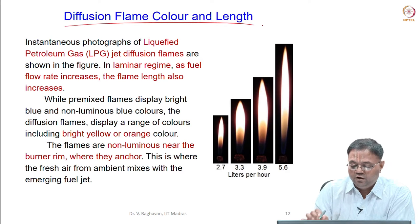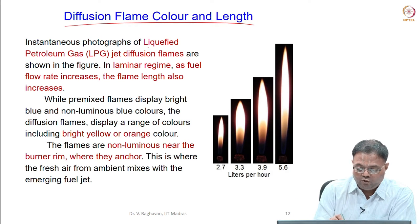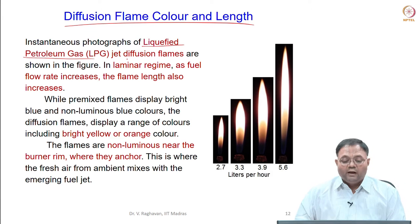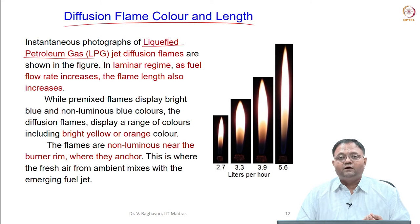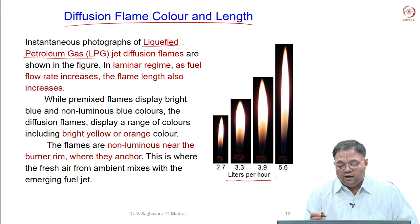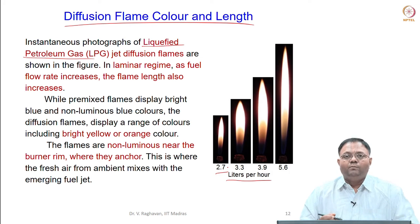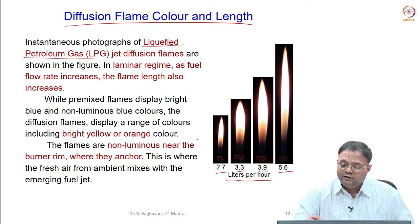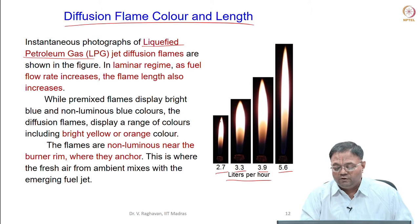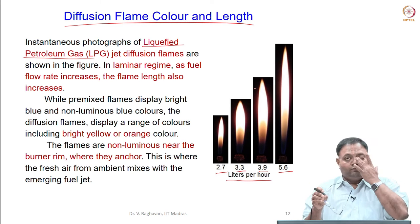We will see some characteristics, color and length of the flames. For example, we have chosen the LPG flame. Take a burner of some diameter, some radius r, and inject the fuel. The fuel flow rate can be in liters per hour. I fix a value of 2.7 liters per hour of LPG injected to this circular burner, and when you ignite this you get a flame. As I increase the flow rate from 2.7 to 3.3, 3.9, and 5.6, you see an increase in the flame height. This visible flame length increases as the flow rate of the fuel is increased.